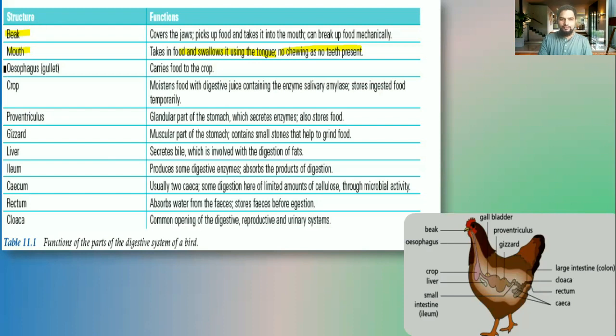Next, the food enters into the esophagus. The esophagus is a tube and that tube will carry the food using the process of peristalsis to carry it down into the crop.